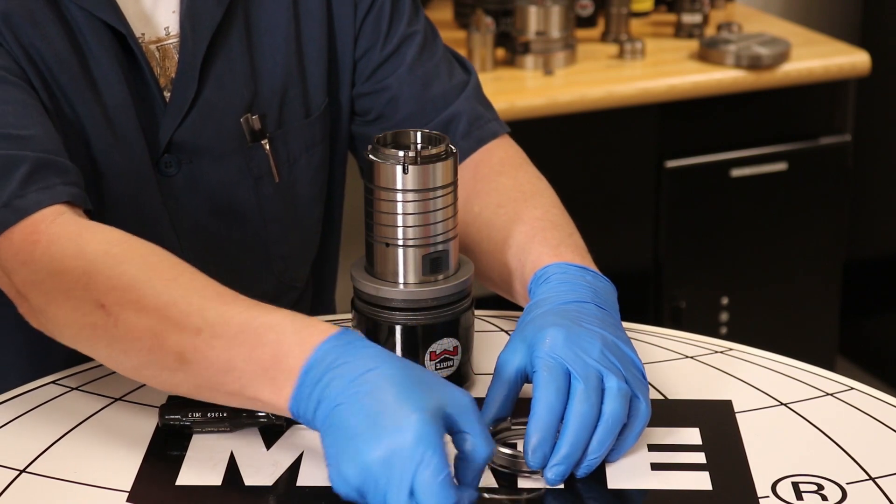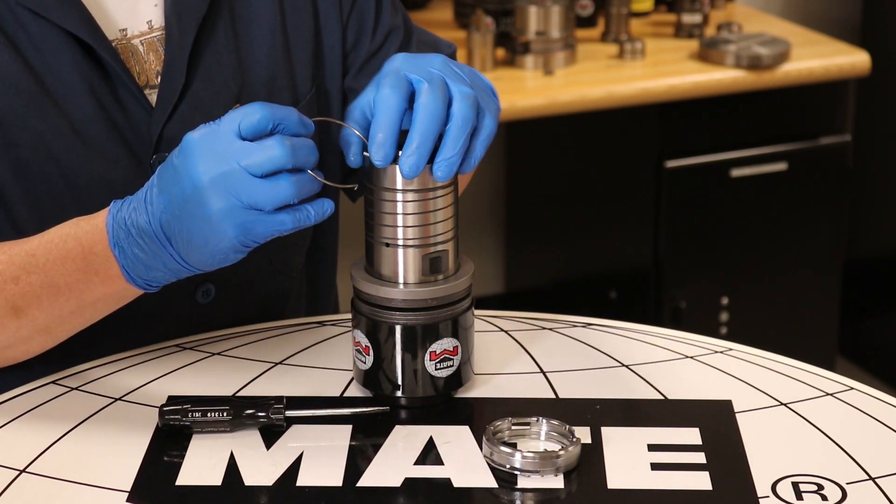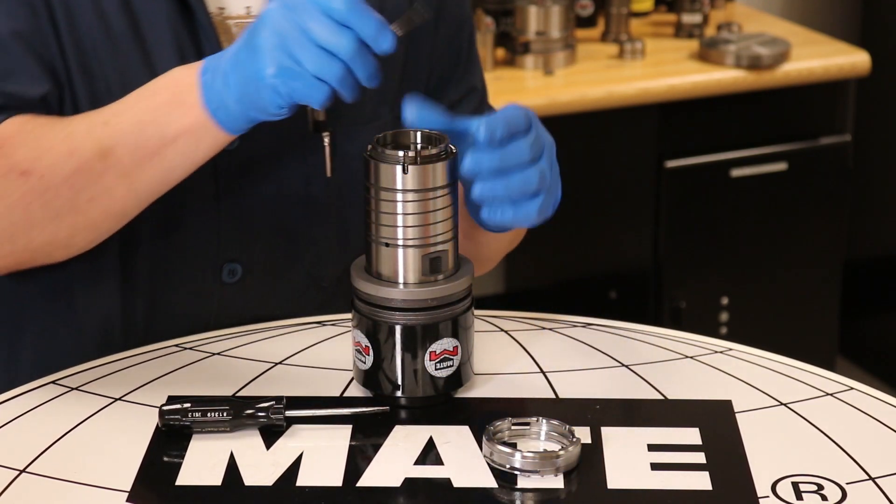Next, we need to remove all five springs. There will be two springs in the relief pocket grooves and three in the ejector pin holes.